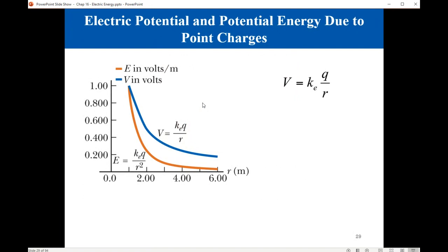We've learned about electric potential and electric potential energy, and the difference between them is simply that electric potential is potential energy per unit charge. Both are scalar quantities. Comparing what we learned last chapter to today: the magnitude of the electric field is inversely proportional to R squared — a steep curve — while the magnitude of the potential is inversely proportional to R. So it is inverse proportionality with R rather than R squared for the field.